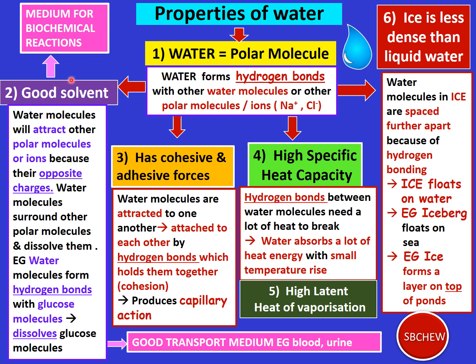In the first video we already studied four properties of water: number one, water is a polar molecule; number two, water is a good solvent; number three, water has cohesive and adhesive forces; number four, water has a high specific heat capacity. In this video we'll be discussing number five, water has a high latent heat of vaporization, and number six, solid water or ice is less dense than liquid water.